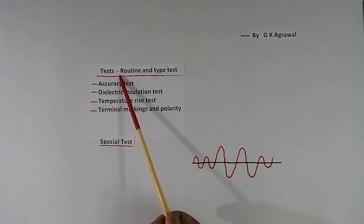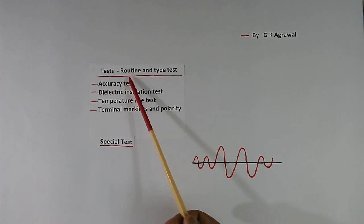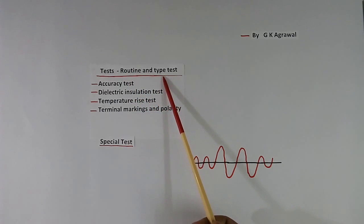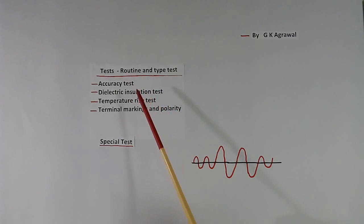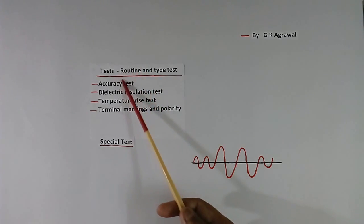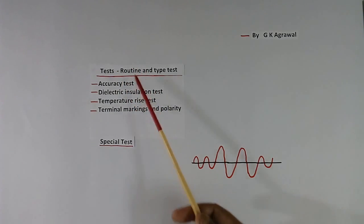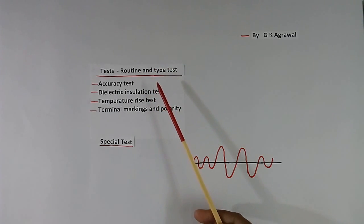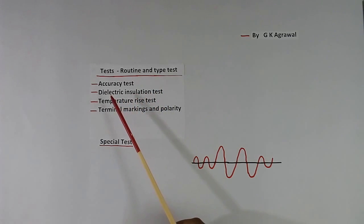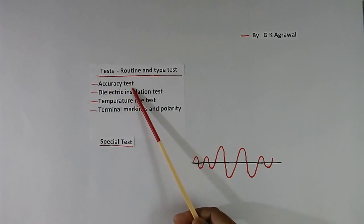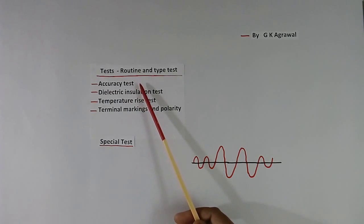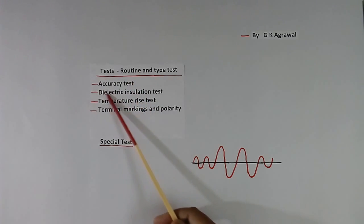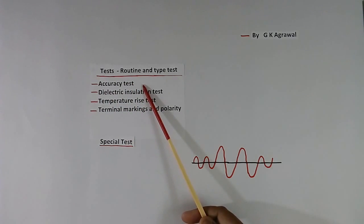Now we come to tests. Tests are of two types — routine and type tests. Suppose we want 10 transformers: routine tests will be done on all 10, but type tests will be done on only 1 or 2 transformers. Then there is the accuracy test — we check whether the output voltage is coming accurately or not. Before doing this test, we check that the multimeter is accurate and properly calibrated.